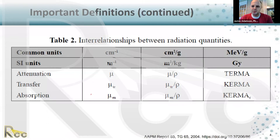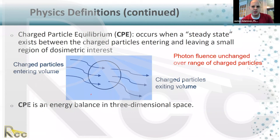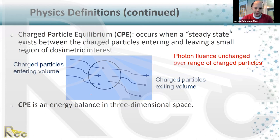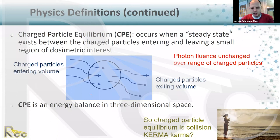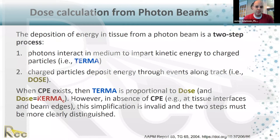Another important concept is charged particle equilibrium, which occurs when there is a steady state between the charged particles entering and leaving a region of dosimetric interest. The key assumptions are that the photon fluence is unchanged over the range of the charged particles and that the charged particle fluence and spectrum aren't really changed throughout the volume. Charged particle equilibrium is essentially an energy balance in three-dimensional space.